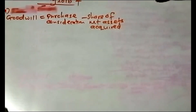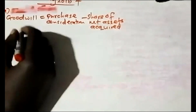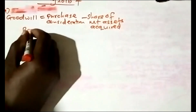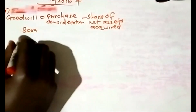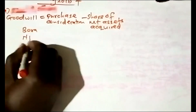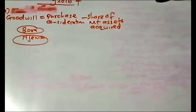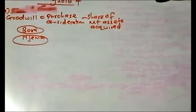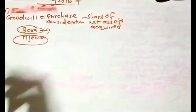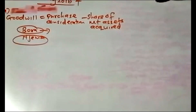We have two companies which were acquired: BORA, which is a subsidiary, and Njema, which is a joint venture. Both companies were acquired in that particular financial year. The main thing you need to ask yourself is: which method am I supposed to use to compute the goodwill of the subsidiary?